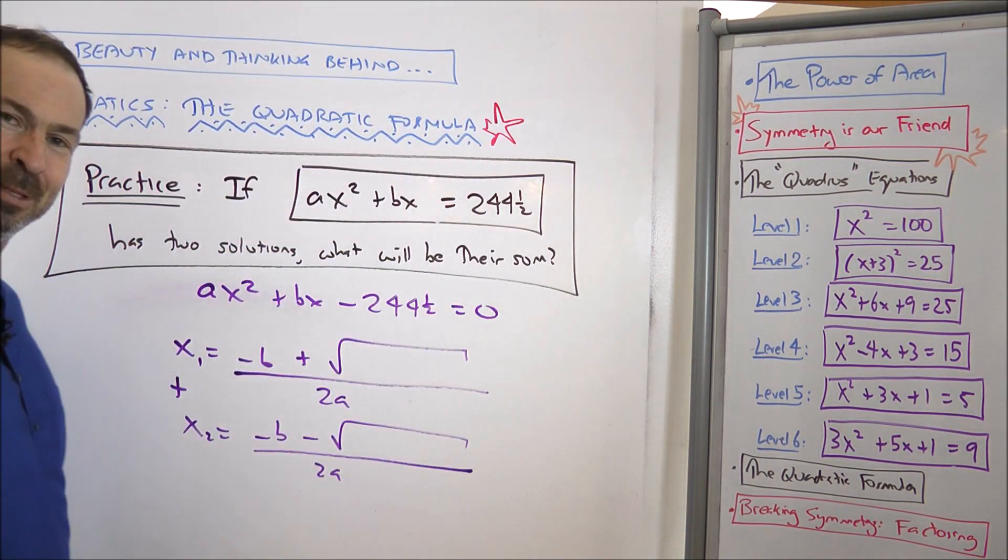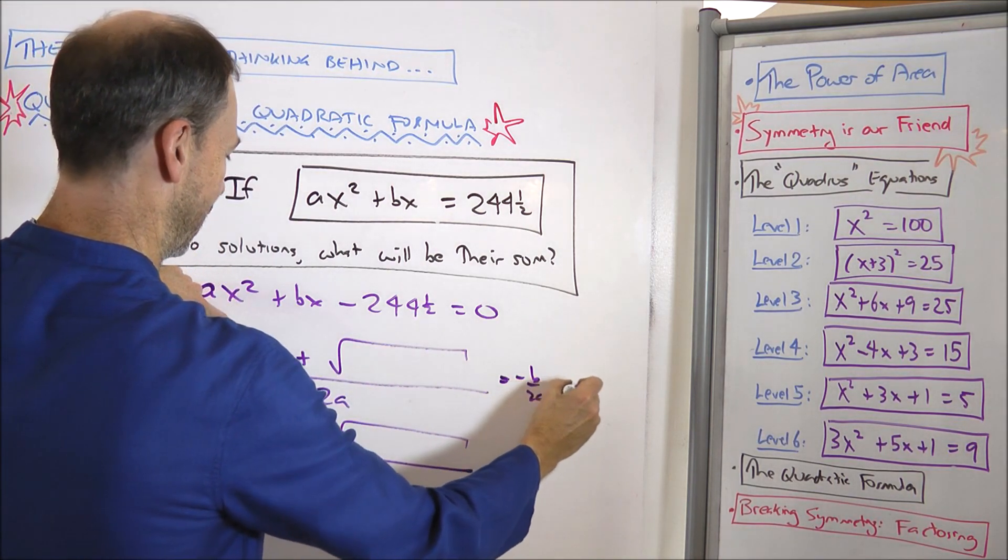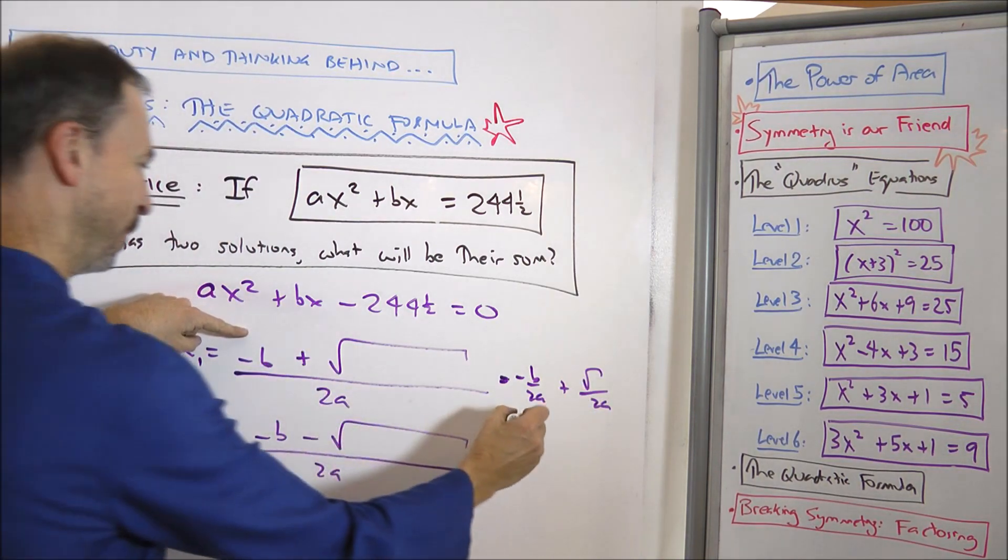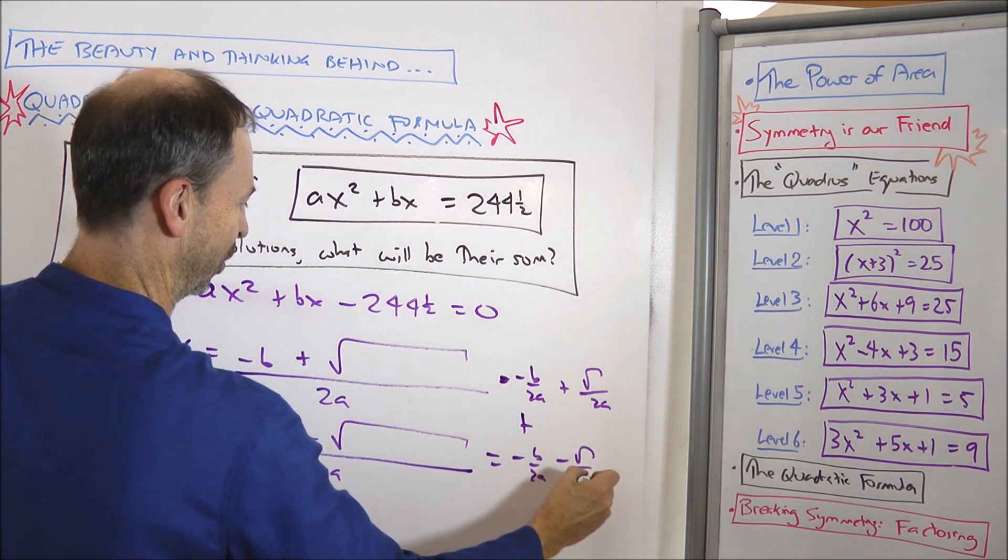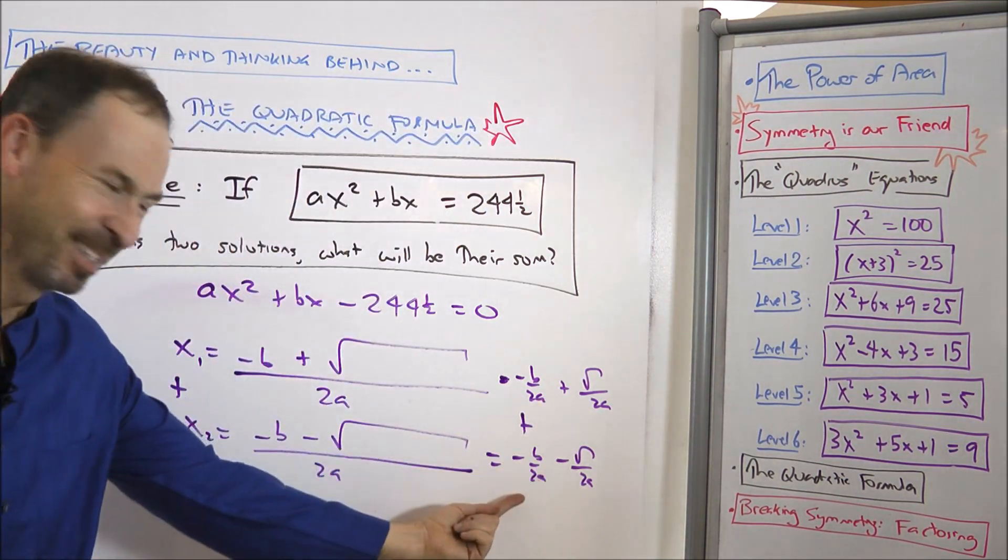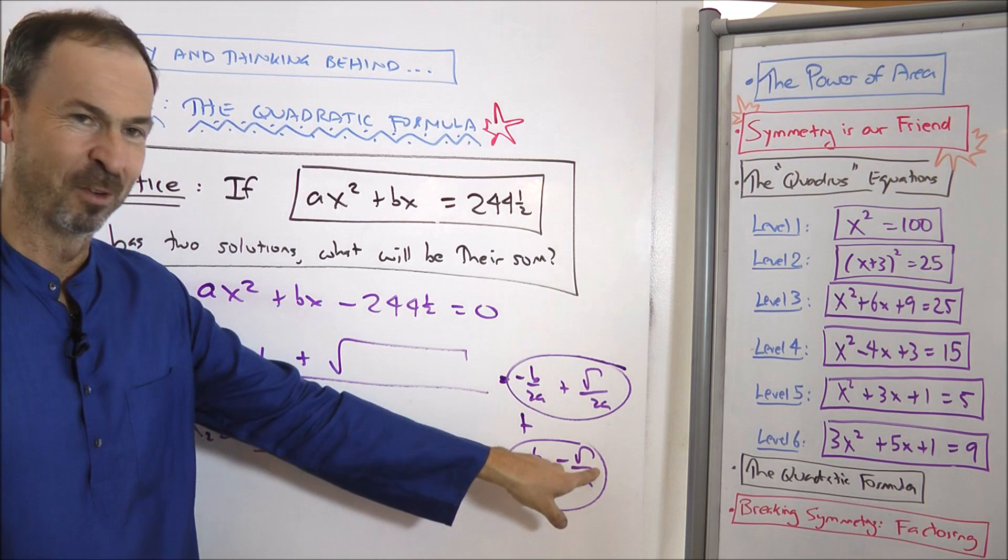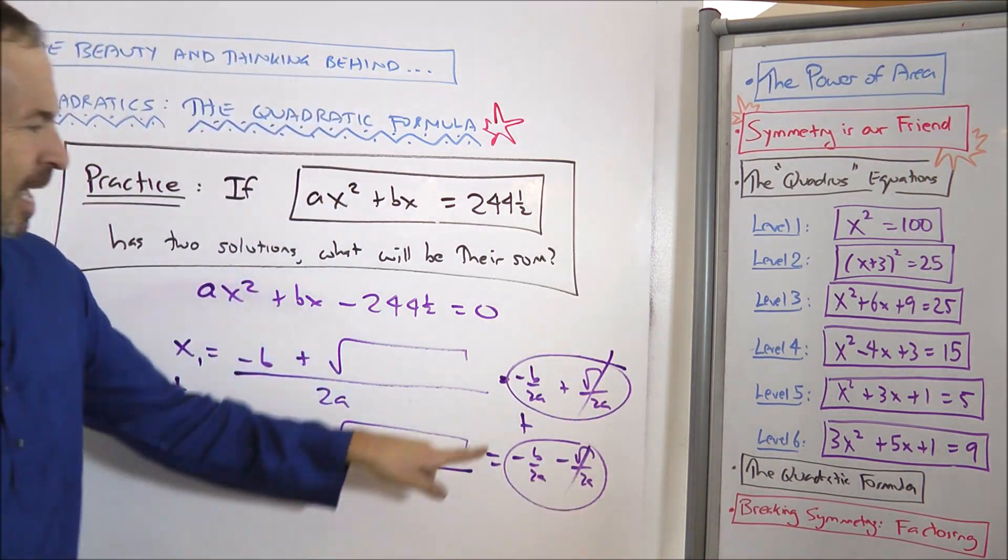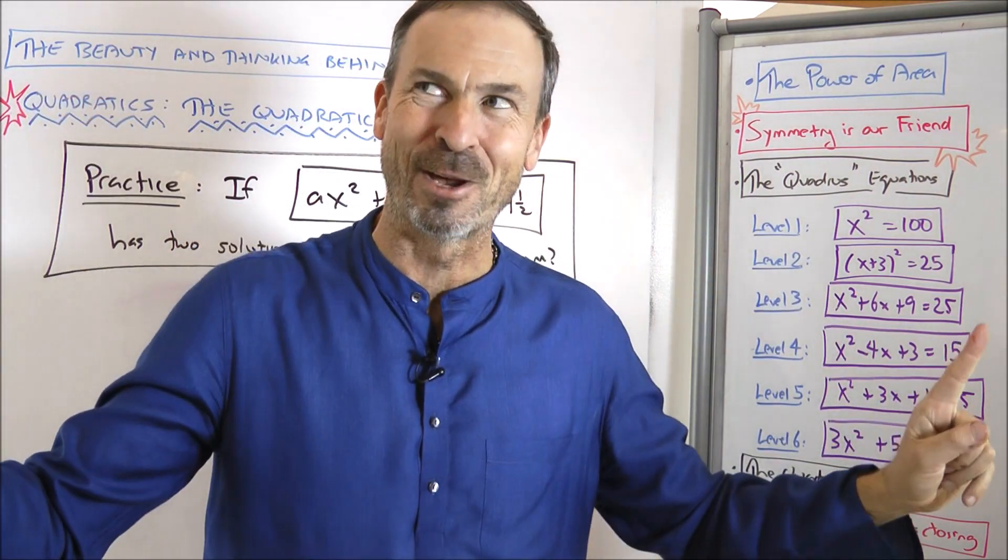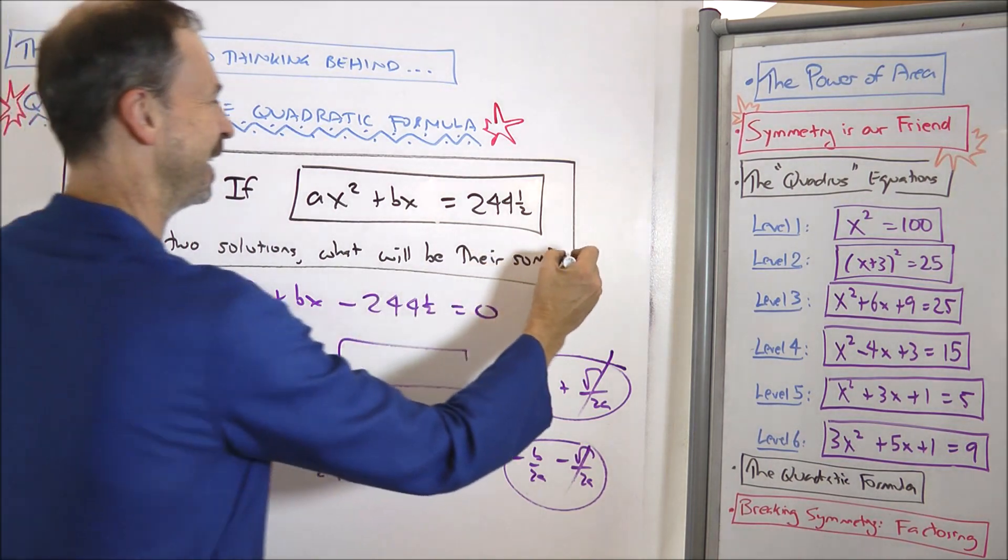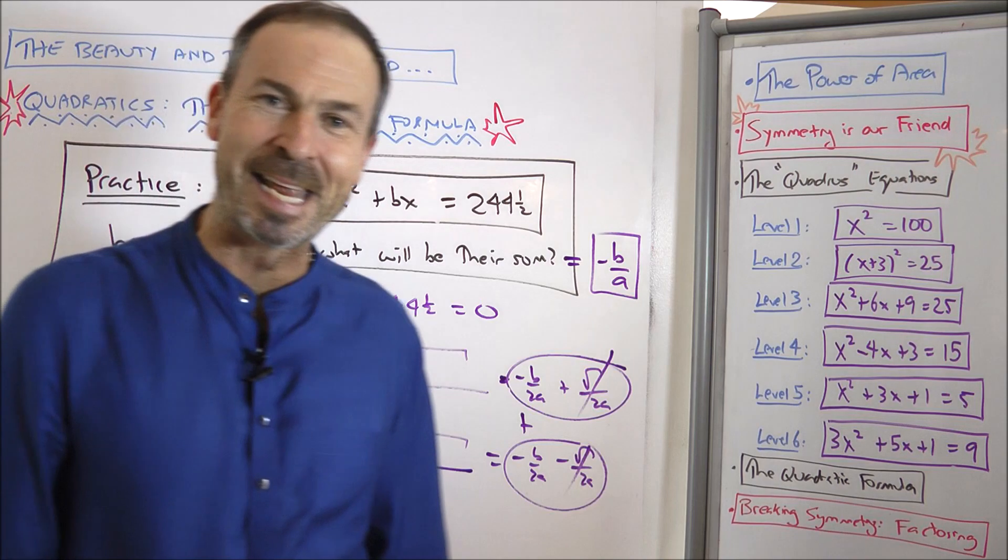If I add them, can you see what's going to happen? I'll get negative b over 2a plus the square root over 2a for that one plus a negative b over 2a minus the square root over 2a for that one. They'll have plus square root over 2a minus square root over 2a. They go away. I'll have negative b over 2a plus a negative b over 2a. I have two copies of negative b over 2a. That is going to be just negative b over a. The sum of the two solutions will be negative b over a. So, whatever the numbers a and b are, that's the sum of the solutions is guaranteed to be negative b over a.